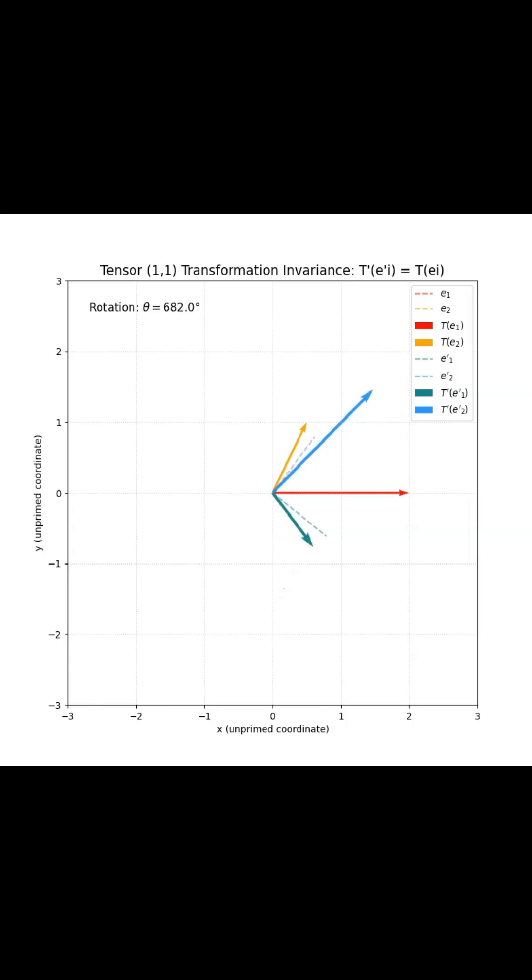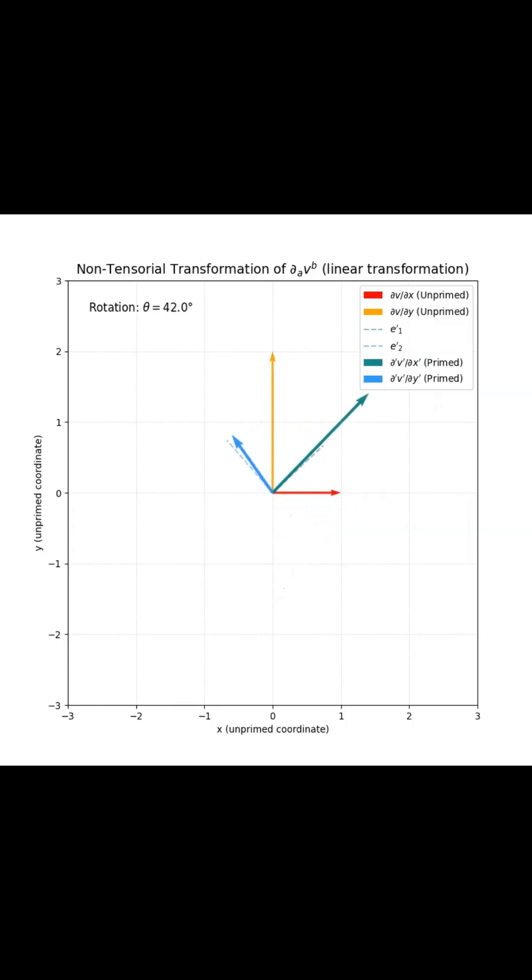So why is this thing so important? Well, it really boils down to three key points. First off, physical laws have to be consistent. It's a principle called physical invariance. What you measure shouldn't change just because your grid is curved instead of straight.